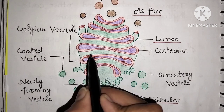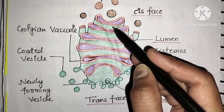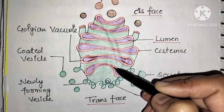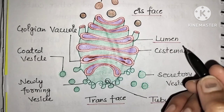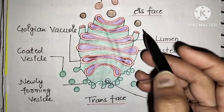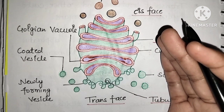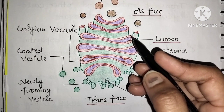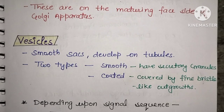The stacks are the cisternae arranged in parallel. In mammalian cells there is a single Golgi apparatus with approximately 40 to 100 stacks in total. In one stack there are typically 4 to 8 cisternae. The next component of the Golgi apparatus is the vesicles.